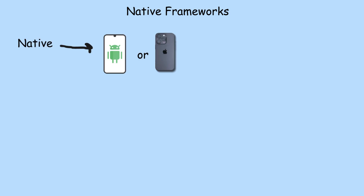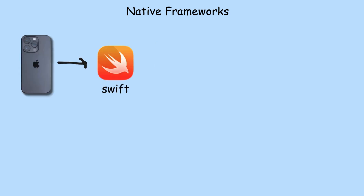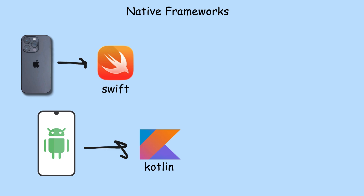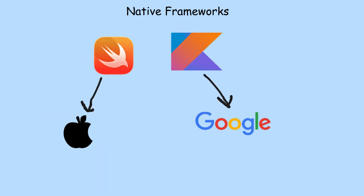Native Frameworks. Native means building apps specifically for one platform. For iOS, developers use Swift, and for Android, they use Kotlin. These are the official languages supported by Apple and Google, so you get full control and top performance.